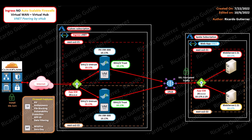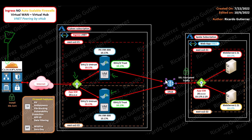Now I will go over the ingress pattern in detail. Let's say you have a user that wants to connect to your web application — this user will first hit Cloudflare, which will protect against DDoS, and you can apply some WAF rules as well. Then the packet will hit the Application Gateway, and the Application Gateway will send the packet to either firewall. The packet then hits the virtual hub, which builds the VNet peering between the ingress VNet and the web app VNet.